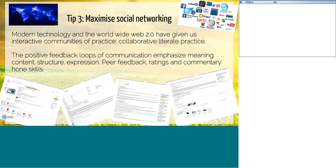Look at some of the other famous network logos that are global phenomena. To function, the positive feedback loops of communication emphasise meaning via content, structure and expression — can anyone hear the functional skills criteria? Peer feedback, ratings and commentary hone skills. If people can't understand one another and have objectives to reach, they just keep bashing away at it until they're communicating effectively. I thought Amazon would be a good example of how the socially interactive, data-rich environment of Web 2.0, in comparison with the static webpages of old, shows day-to-day purchasing interacting with literacy practices. You should now see on your screens another poll asking in which ways you are aware that Amazon is interactive and how this promotes literacy skills.